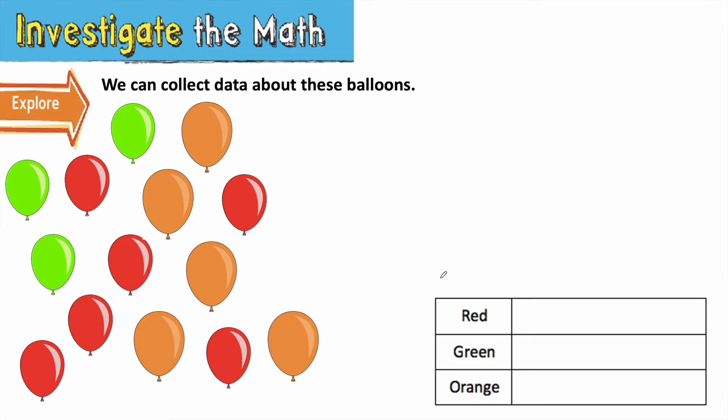You're going to open reminding kids about collecting data using tally marks. So we can collect data about these balloons. We know that we can use tally marks to represent how many of each color there are. So let's start by counting the red balloons first. I'm going to put one tally for every balloon I count.